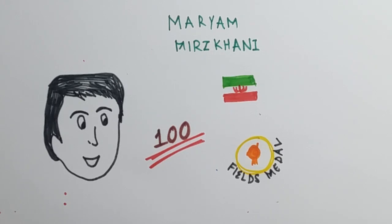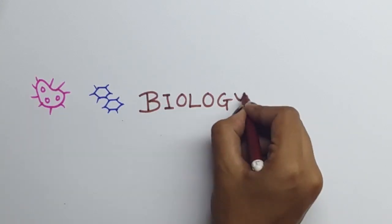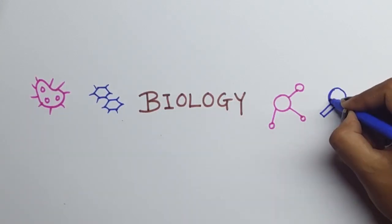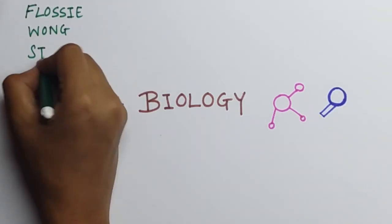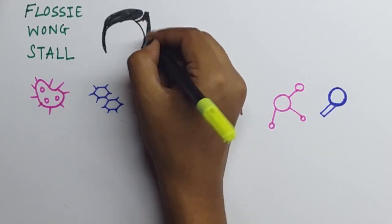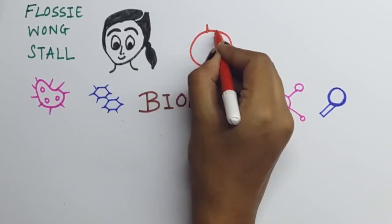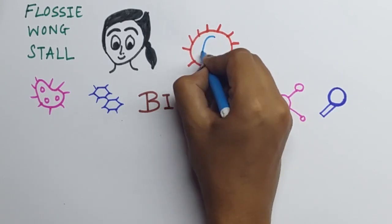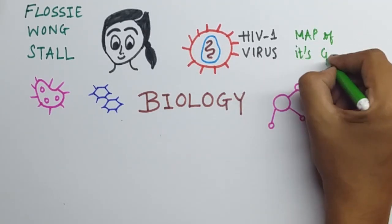What about the female biologists of the world? Are we forgetting them? Not at all. Flossie Wong-Staal. Flossie is a Chinese American virologist and a molecular biologist. She was the first scientist to clone the HIV-1 virus and determine the map of its genes, which was the first step in proving that HIV is the cause of AIDS.